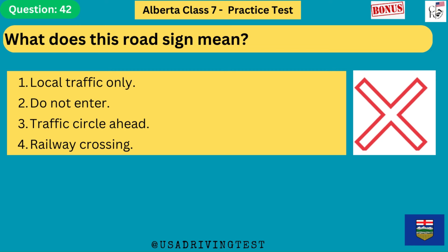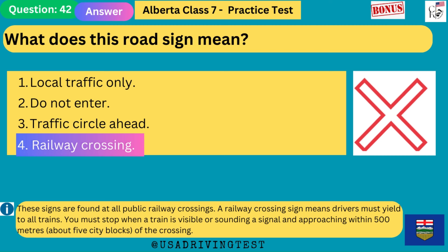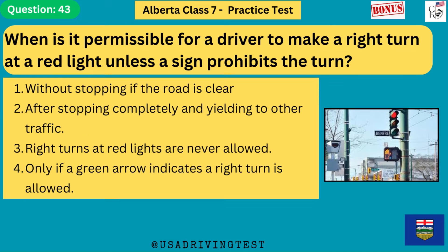What does this road sign mean? 1. Local traffic only. 2. Do not enter. 3. Traffic circle ahead. 4. Railway crossing. The answer is 4: railway crossing. These signs are found at all public railway crossings. A railway crossing sign means drivers must yield to all trains. You must stop when a train is visible or sounding a signal and approaching within 500 meters — about 5 city blocks — of the crossing.